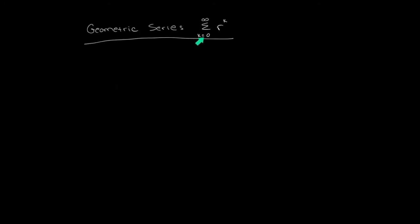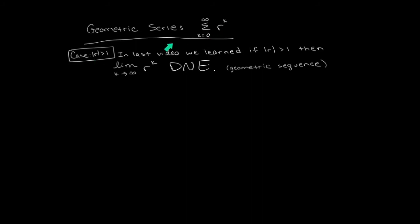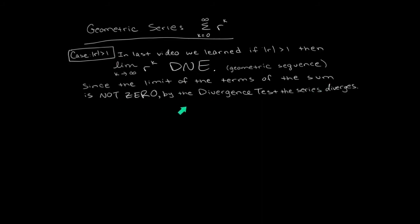The next topic is geometric series. A geometric series generally has the format r to the k, where r is a constant and k starts at k equals zero and continues summing as k goes to infinity. We're going to go through a little proof to classify what happens for different values of r. You won't be expected to reproduce these proofs, but it will give you background so once I tell you the rules you can see where they came from. First, consider the case where the absolute value of r is greater than one. From the previous video, for a geometric sequence the limit of individual terms will not exist if the absolute value of r is greater than one. The limit of the individual terms does not approach zero, so the divergence test tells us the series diverges in that case.